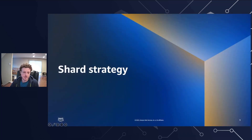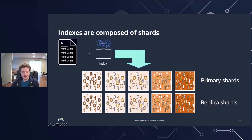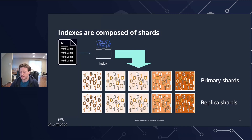Let's dive into shard strategy. Indexes are composed of shards. When you send data to OpenSearch Service, you send that data to an index. An index is analogous to a database table with documents as the rows and fields as the columns. When you create the index, you tell OpenSearch how many primary shards you want to create. The primary shards are independent partitions of the full dataset. OpenSearch Service automatically distributes your data across the primary shards in an index. You can configure replicas of the index, and each replica shard is a full copy of the corresponding primary shard.